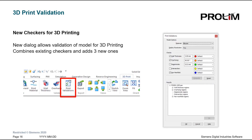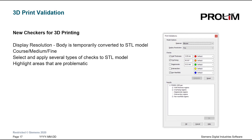Finally, Solid Edge 2021 has introduced the new Print Validations command. This new dialog allows validation of the model for 3D printing and combines existing checkers with three additional ones. Here we can change the display resolution of the model to coarse, medium, or fine, temporarily converting the model to an STL format. We can also validate the wall thickness and overhang. This new validation tool gives us the ability to observe and highlight any possible print complications and address them before ever printing the model, thus greatly reducing the amount of print time and material costs.